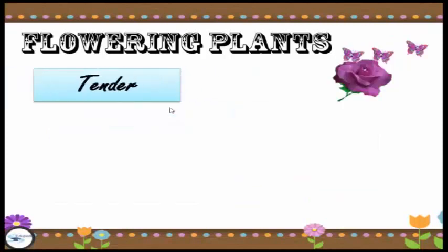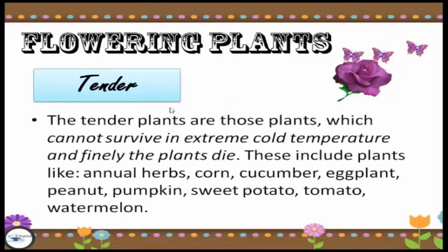First, we have the tender hardy flowering plants. Tender plants are those plants which cannot survive in extreme cold temperatures and the plants eventually die. These include plants like annual herbs, corn, cucumber, eggplant, peanut, pumpkin, sweet potato, tomato and watermelon.